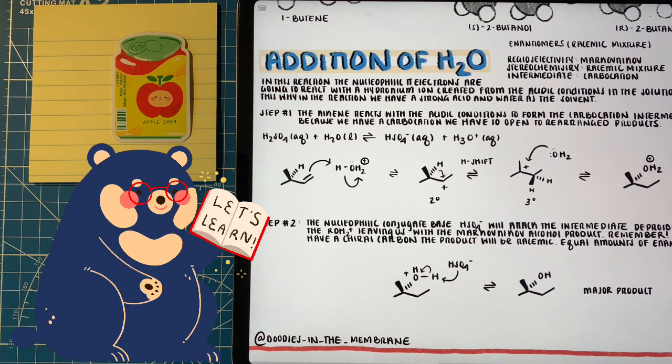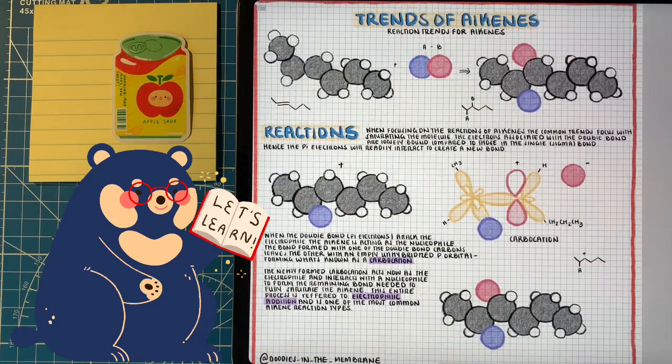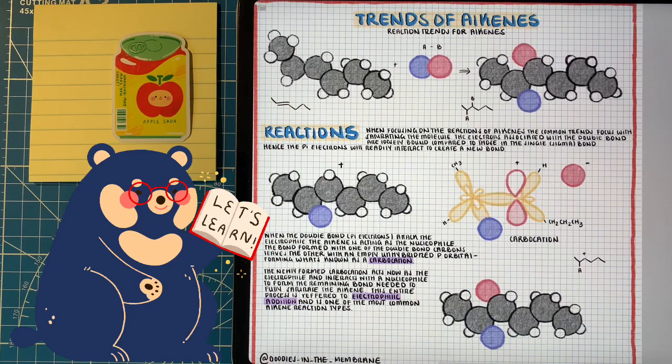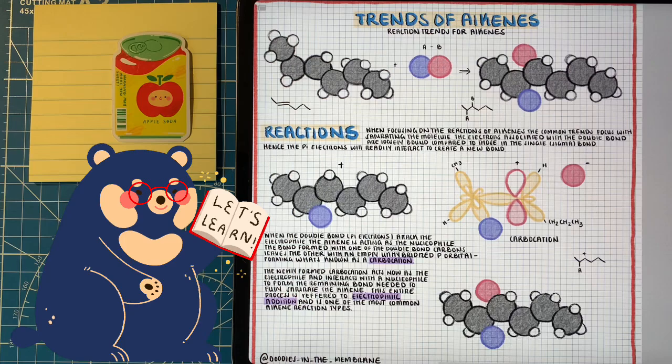And because this product was the result of the rearrangement of the more stable carbocation, this is what we consider our major product of our reaction. So we formed a Markovnikov alcohol through acid-catalyzed hydration of alkenes. But we've looked at four different electrophilic addition reactions of alkenes, hydrohalogenation, halogenation, formation of halohydrins, and acid-catalyzed hydration.